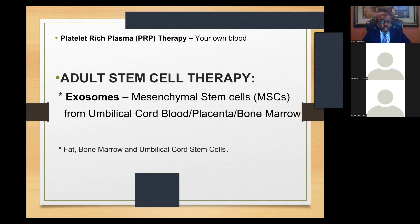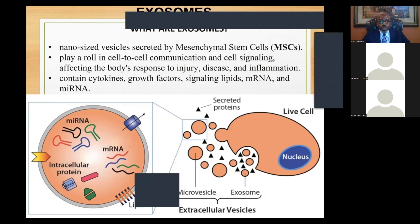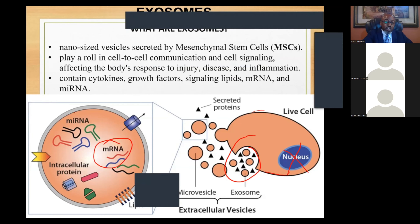Exosomes are next under other stem cell therapy. Exosomes are tiny particles — very small secretory packets that control stem cell communication. They do not have a nucleus, but they play a very important role in cell-to-cell communication and cell signaling in adult stem cell therapy. A whole cell has a nucleus, but exosomes do not — they are tiny but carry all the information needed, including mRNA and RNA. DNA is not needed for stem cell therapy.